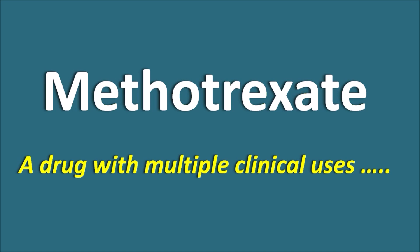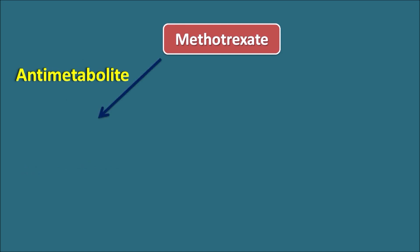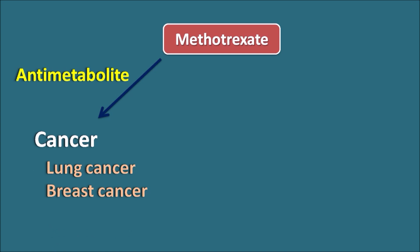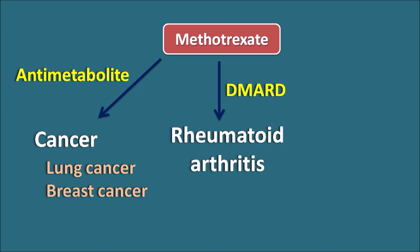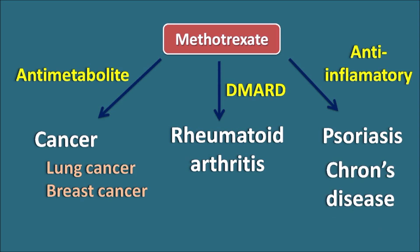Methotrexate is a drug with multiple clinical uses. It can act as an anti-metabolite, and is used in cancers such as lung cancer and breast cancer. It is also used as a DMARD — disease-modifying anti-rheumatic drug — in the treatment of rheumatoid arthritis. Additionally, methotrexate has anti-inflammatory action and is used in conditions like psoriasis and Crohn's disease.